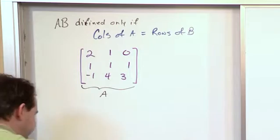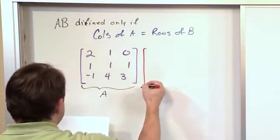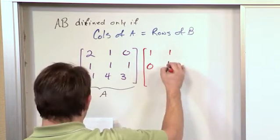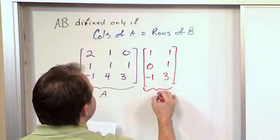Now we're going to multiply it by another matrix, which I'll do in red here. Matrix B will be 1, 1, 0, 1, negative 1, 3. So this guy in red here is matrix B. We want to multiply these things together.